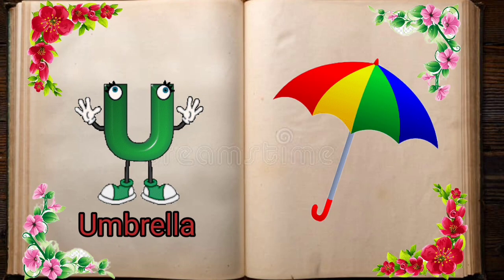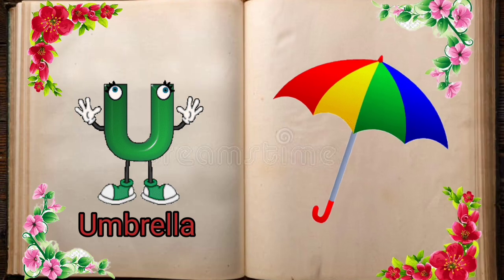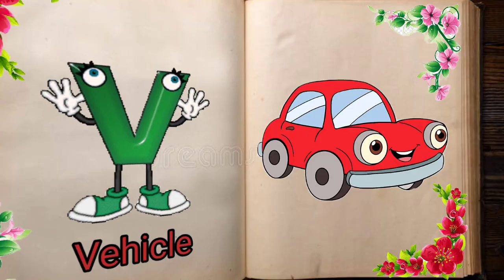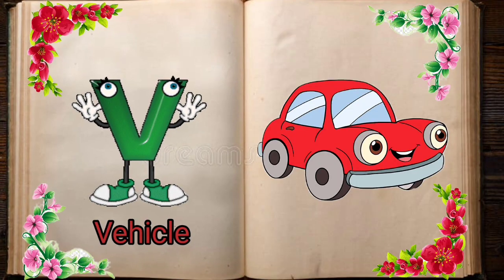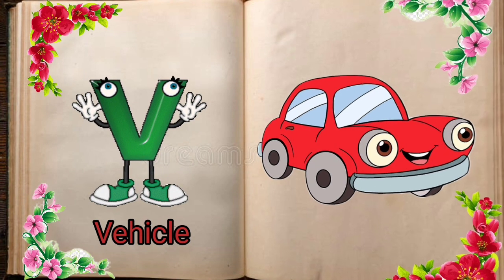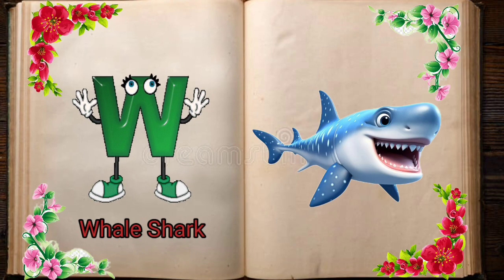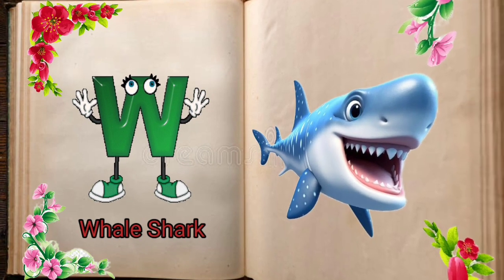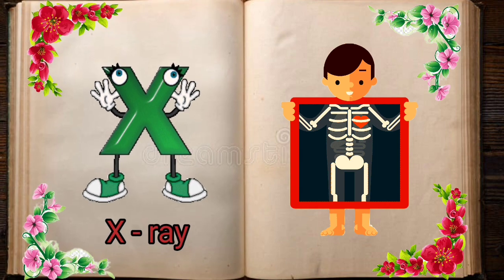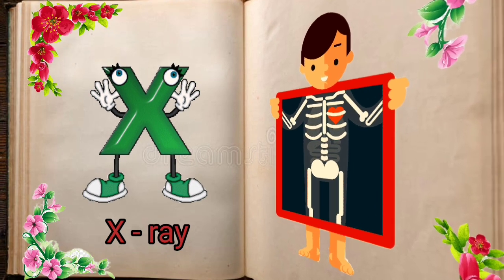U is for Umbrella, U-U-Umbrella. V is for Violin, V-V-Violin. W is for Watch, W-W-W-Watch. X is for Xylophone, X-X-Xylophone.